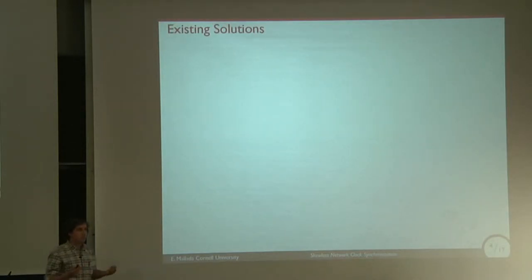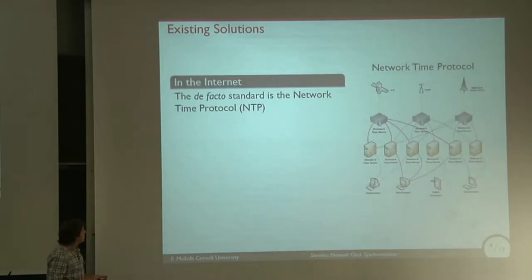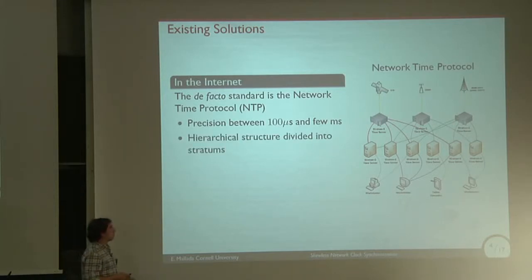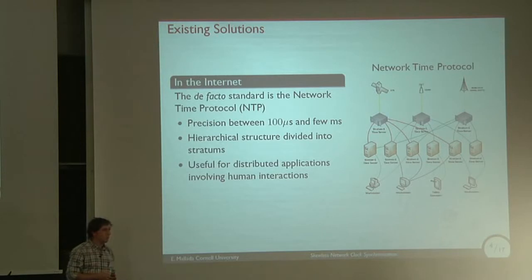This problem has been studied for a long time, more than 20 years, and there are several solutions available. Some of them are standards. For instance, in the internet, the standard is called Network Time Protocol, NTP. A couple of characteristics is that it can achieve precision of around 100 microseconds, so a few milliseconds depending on the network latencies. It has a hierarchical structure and it's useful for distributed applications that involve human interactions.